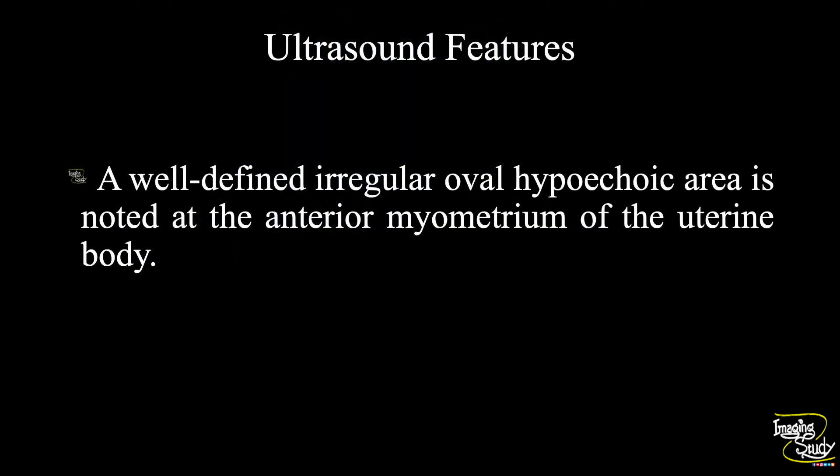So in summary, a well-defined irregular oval hypoechoic area is noted at the anteromyometrium of the uterine body, suggesting fibroid uterus.